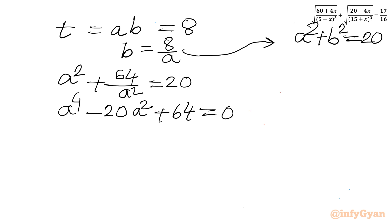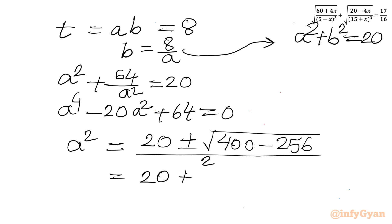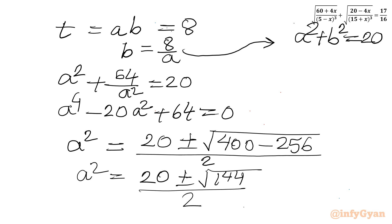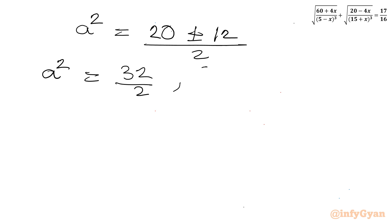So using the quadratic formula: discriminant is 400 minus 4 times 1 times 64, which is 400 minus 256, divided by 2. So I will write: a squared equals (20 plus or minus square root of 144) divided by 2. So a squared will be (20 plus or minus 12) over 2. That gives a squared equal to 16 or a squared equal to 4.